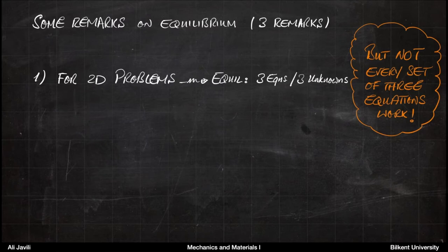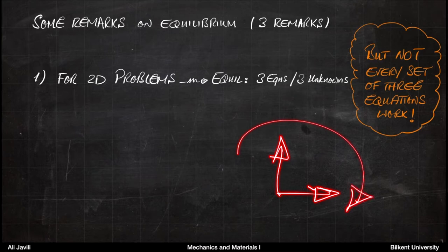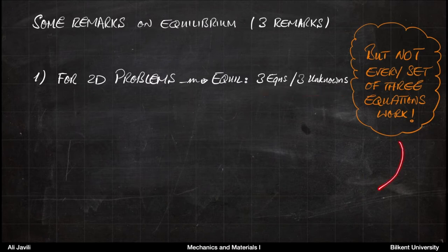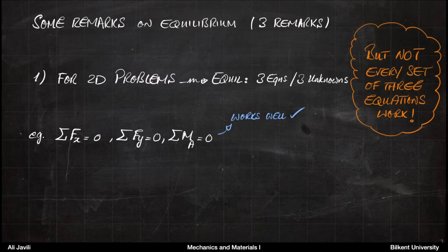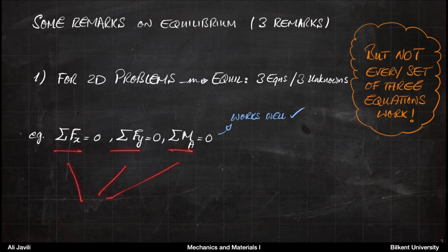In a two-dimensional problem you have two translational coordinates, x and y, and then a rotation as the third direction. So you have three equations and three unknowns; however, not every set of three equations will work. Mathematically, the three equations must be linearly independent, otherwise it won't work. For your three equations, if you use equilibrium of forces in x, equilibrium of forces in y, and the sum of moments with respect to a point, these three usually give you three independent equations and work well.